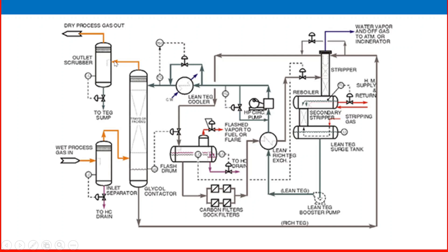Wet gas is entering from the inlet knockout drum. Sometimes this inlet knockout drum is an integral part of the absorber; sometimes it is outside. Wet gas enters, liquid and contaminants are removed, and the wet gas after removal of free water enters the absorber and goes upward. Dry gas without moisture is released from the top of the tower through the demister pad, which helps to remove further moisture, and then goes to the outlet knockout drum. Then the dry process gas out.